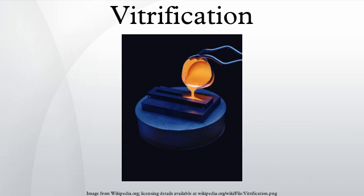Vitrification is a proven technique in the disposal and long-term storage of nuclear waste or other hazardous wastes. Waste is mixed with glass-forming chemicals in a furnace to form molten glass that then solidifies in canisters, thereby immobilizing the waste. The final waste form resembles obsidian and is a non-leaching, durable material that effectively traps the waste inside. The waste can be stored for relatively long periods in this form without concern for air or ground water contamination.